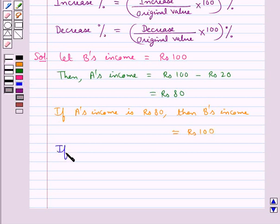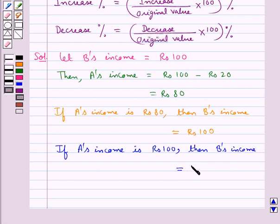So if A's income is Rs. 100, then B's income would be equal to Rs. 100 upon Rs. 80 times Rs. 100.